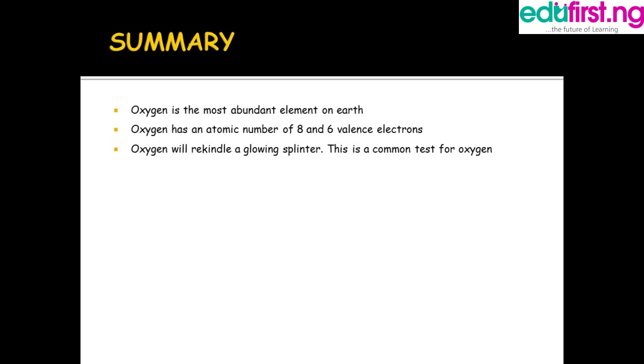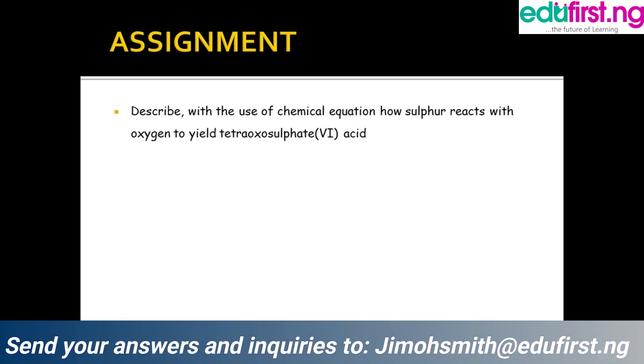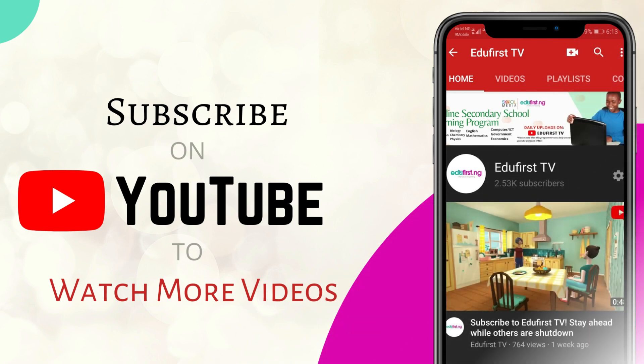I have some assignments here for you. With the use of chemical equations, show how sulfur reacts with oxygen to yield tetraoxosulfate(VI) acid. Thank you and we've come to the end of this class.